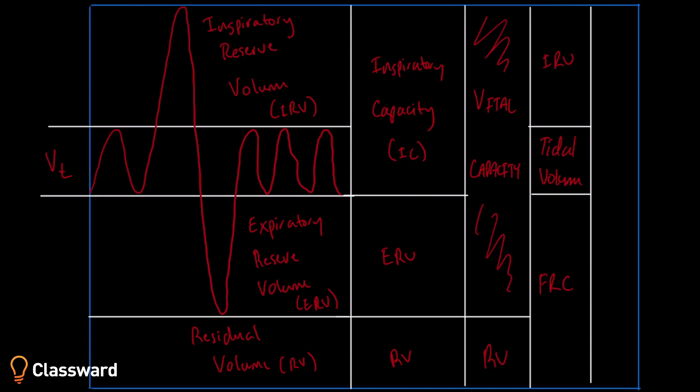And then lastly on the right here is total lung capacity. So total lung capacity is this entire diagram. It's the inspiratory reserve volume plus tidal volume plus the expiratory reserve volume plus residual volume. You add those four things up, you get your total lung capacity.